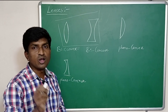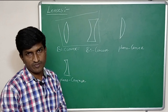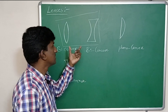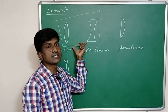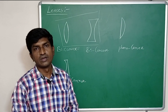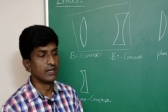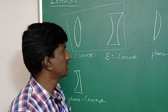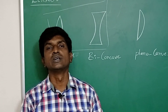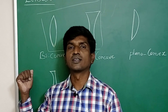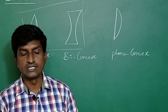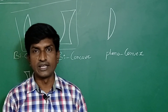These two lenses — biconvex and biconcave — are what we are discussing in this class. The thickness of these lenses is negligible; they are very thin. In the next class we will discuss the important terms related to biconvex and biconcave lenses. Thank you.